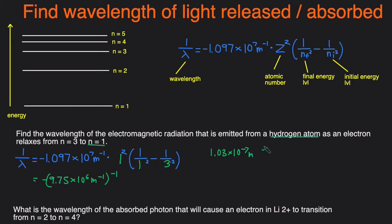I dropped the negative because the wavelength has to be positive, it can't be negative. So that's the final answer in meters, but if we want to convert that to nanometers we can just multiply this by 10 to the 9th and that will give us 103 nanometers.